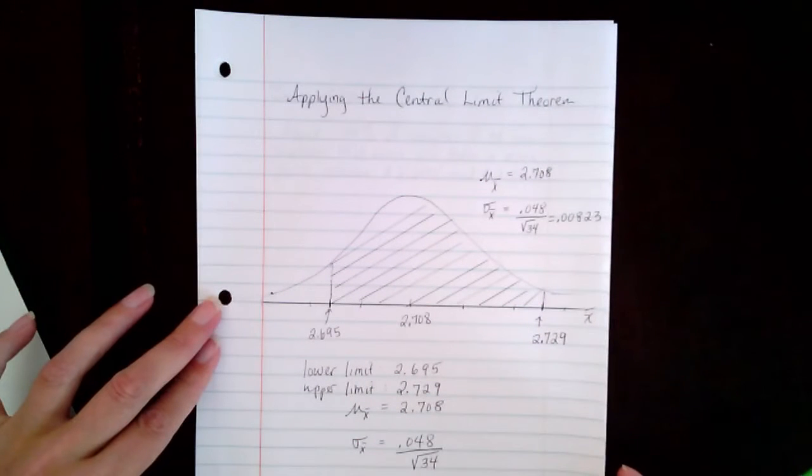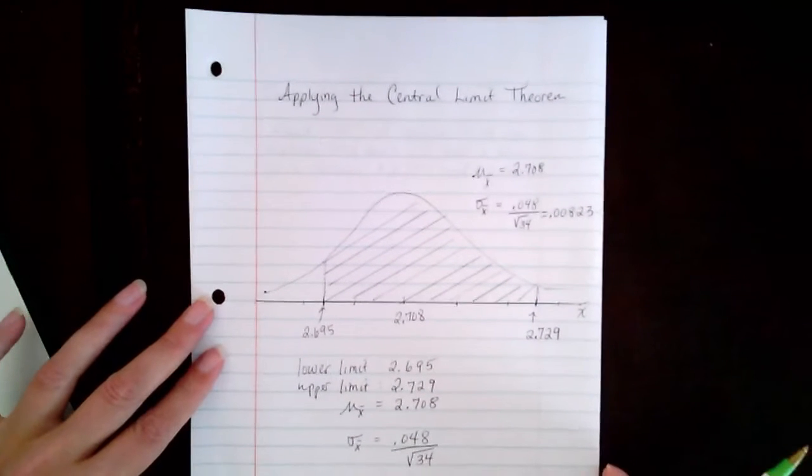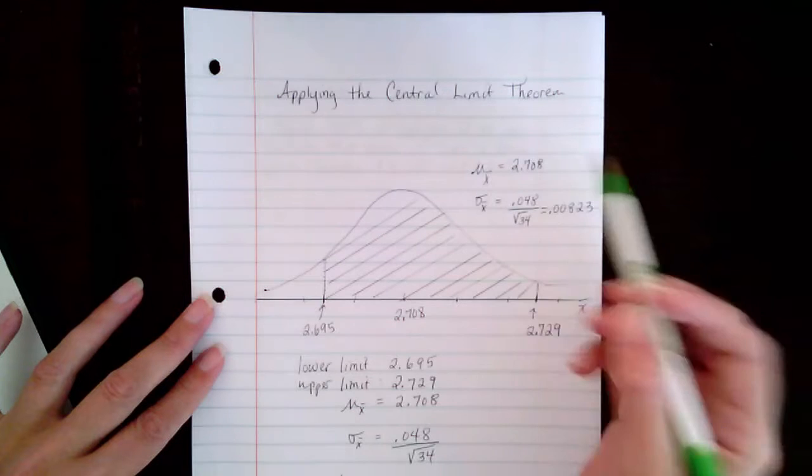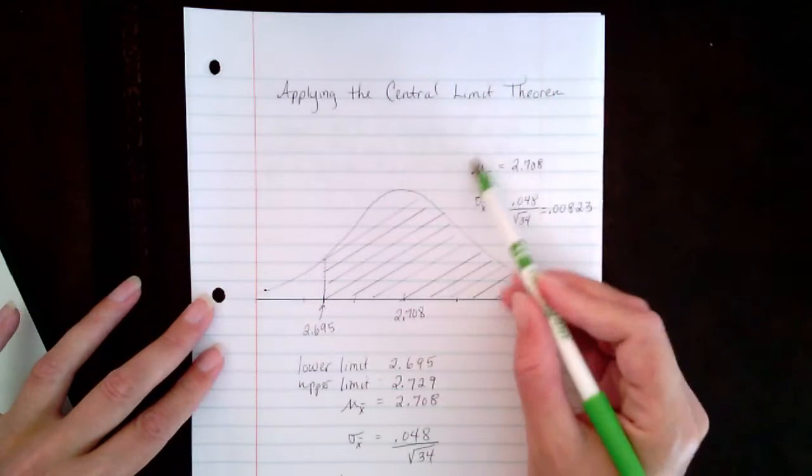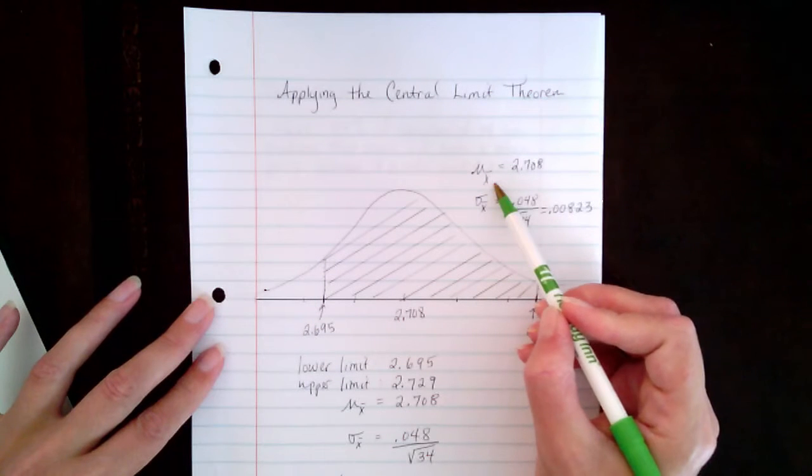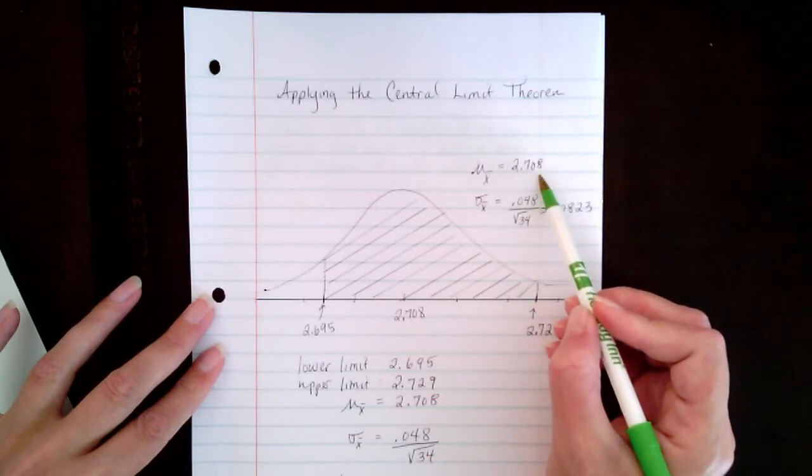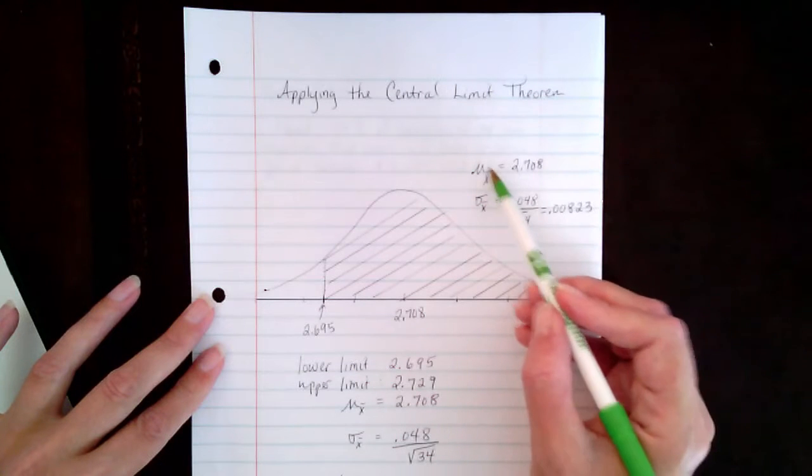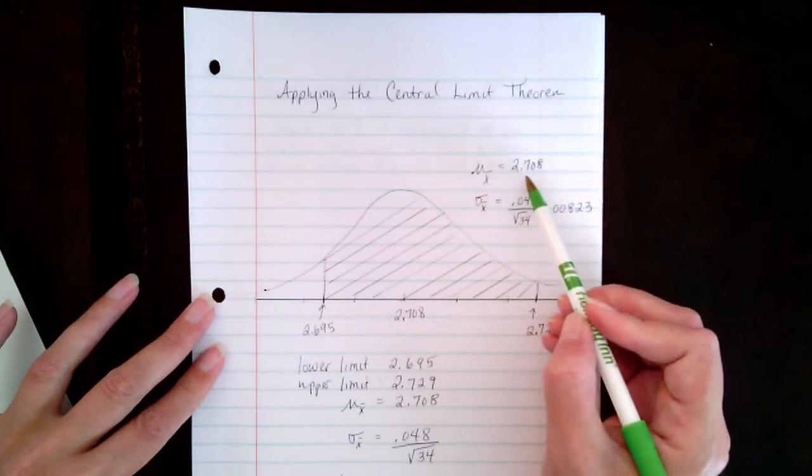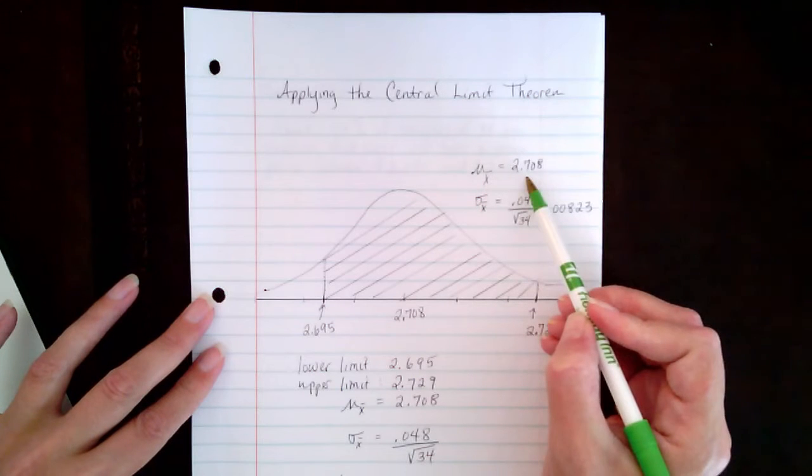I have drawn the bell curve, the normal bell curve here, and I have labeled what we were given. We were given that the mean of the population was 2.708, and remember that the mean for the sample mean is the same as the population mean.